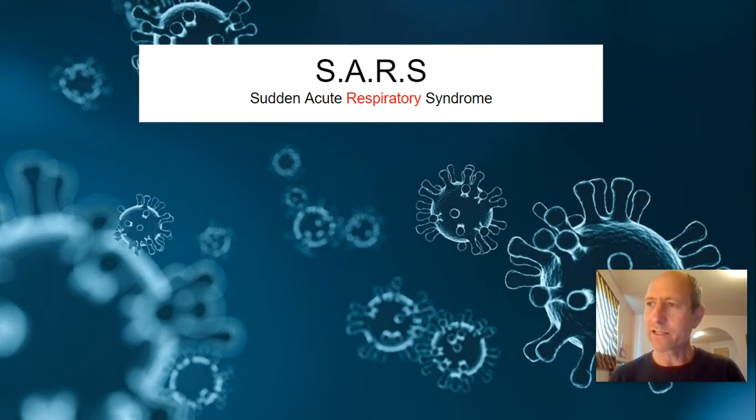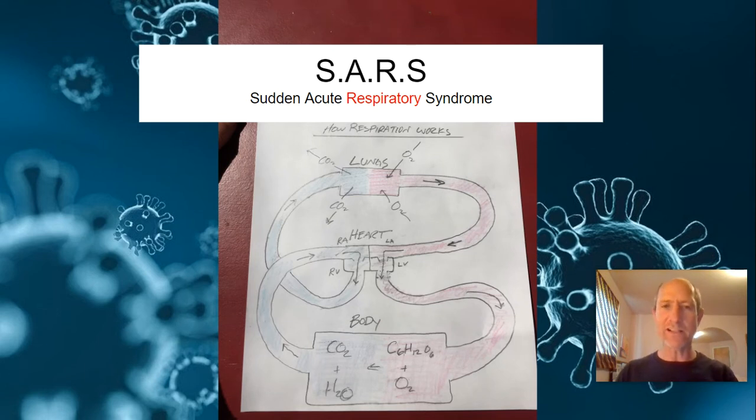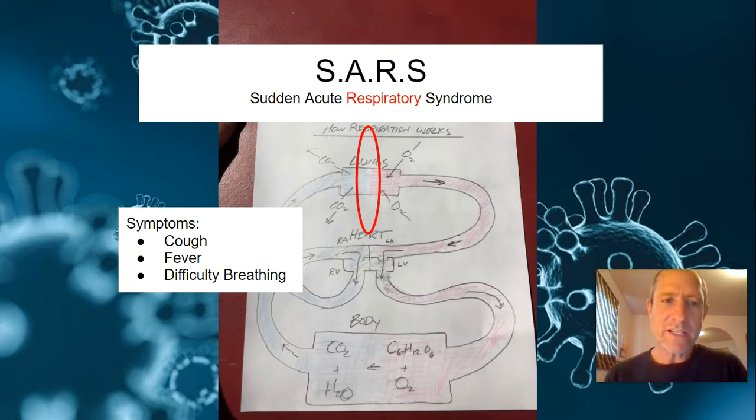So COVID-19 is the latest iteration of SARS, which stands for Sudden Acute Respiratory Syndrome. So the key word there is respiratory. We studied last time about what respiration is using this model right here. And the real key part of the pathophysiology of COVID-19 is this area right here, this area of exchange in the lungs, where carbon dioxide is taken away from red blood cells, and oxygen is added to the red blood cells. And that happens inside of the lungs. So sudden acute respiratory syndrome has symptoms. And three of the most prevalent symptoms are cough, fever, and difficulty breathing. So we're going to learn why these three symptoms happen.